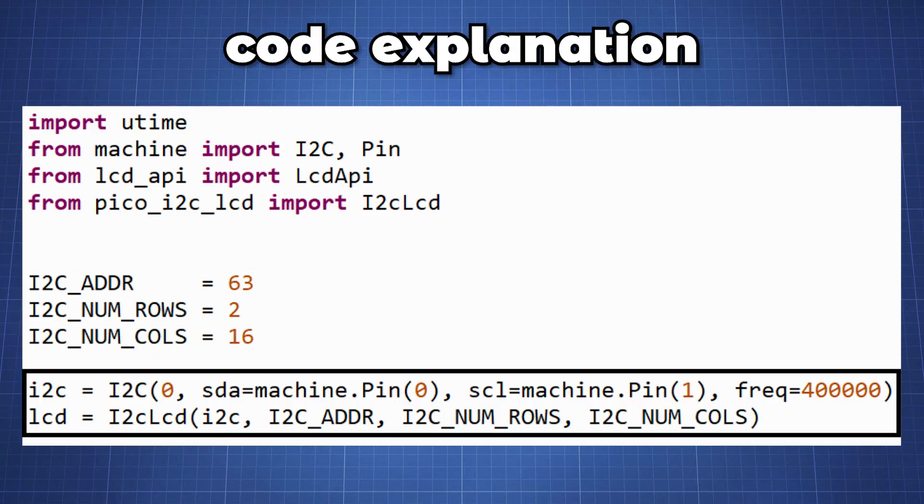Then we can start to initialize our I2C communication, setting it equal to the variable I2C. Finally we initialize our LCD using the library by setting it equal to the variable LCD.